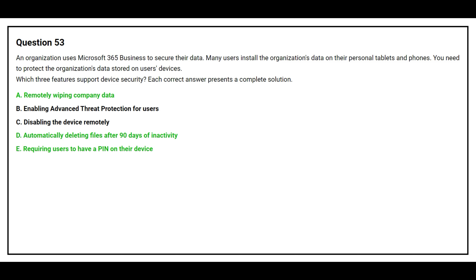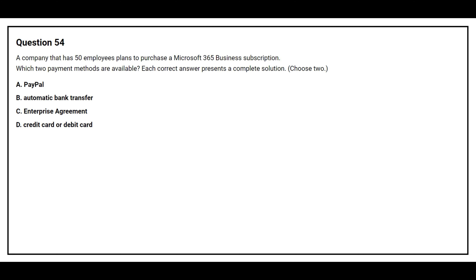Question number 54. A company that has 50 employees plans to purchase a Microsoft 365 Business subscription. Which two payment methods are available? Option A: PayPal. Option B: Automatic bank transfer. Option C: Enterprise agreement. Option D: Credit card or debit card.